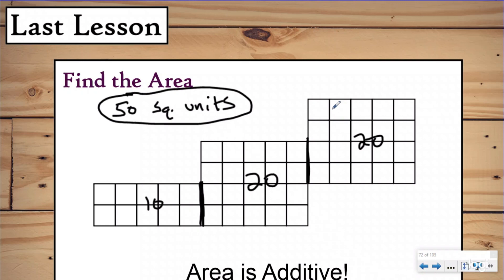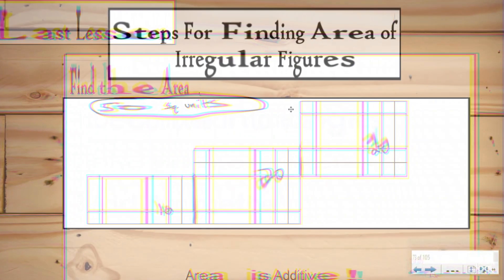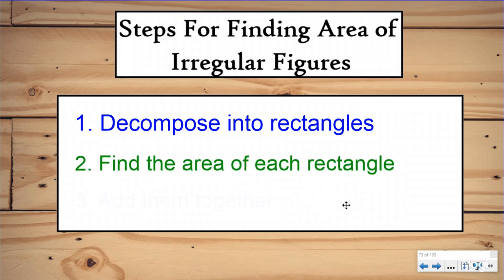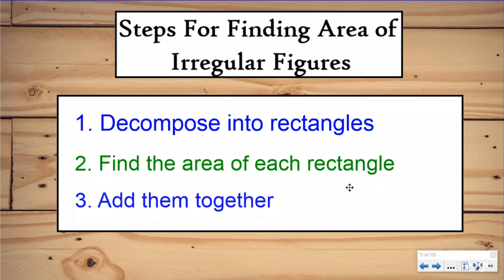To do that, we talked about three steps. Step one: decompose the irregular figure into rectangles. Step two: find the area of each rectangle. Step three: add those areas together. Last lesson we found the area of each one by counting the unit squares, then added the total area together.